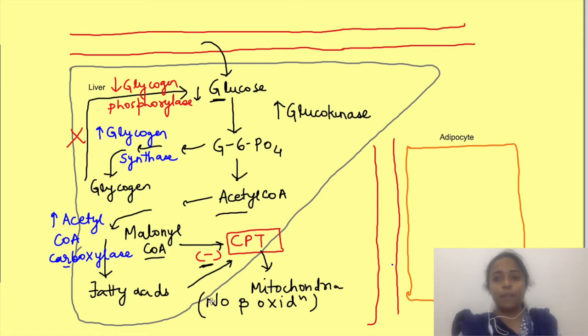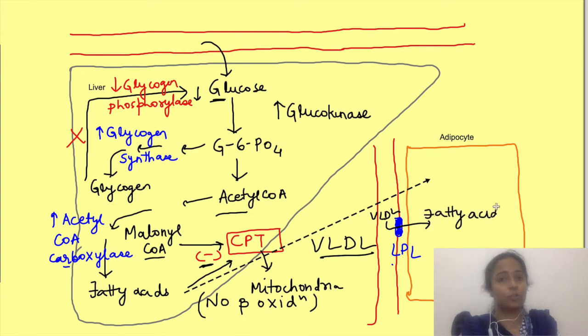Well now the formed fatty acids should go and get stored in their depot, that is adipose tissue. So they are transported from liver to adipose tissue as triacylglycerol in VLDL via blood. Insulin increases the expression of lipoprotein lipase in the walls of capillaries of adipose tissue. This lipoprotein lipase releases fatty acids from triacylglycerols in VLDL which then enter into the adipose tissue and is stored. So these were the actions of insulin in liver and some on adipose tissue.